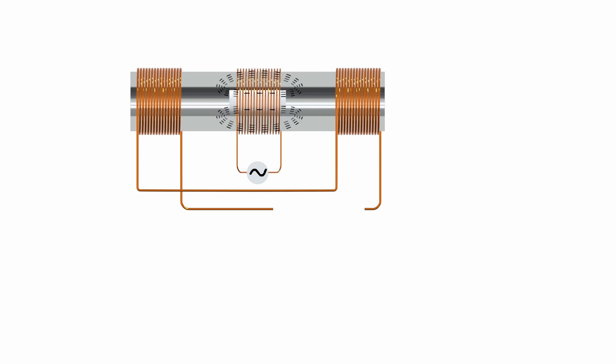Now, let's understand how the LVDT works. When the AC power source is activated, an alternating current flows through the primary coil, creating a varying magnetic field.